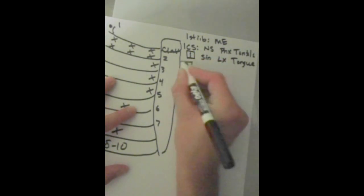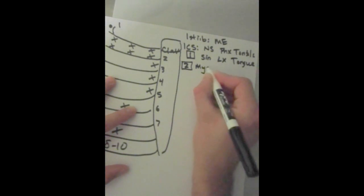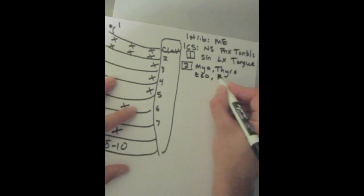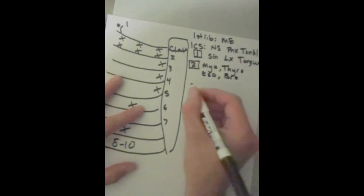Second intercostal space, we've got the myocardium, the thyroid, the esophagus, and the bronchus. So I think of this as myo, thyro, iso, and bro. A bunch of things that end in the letter O.